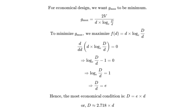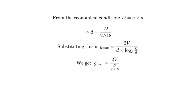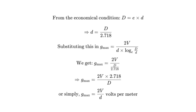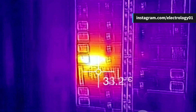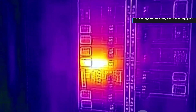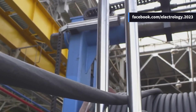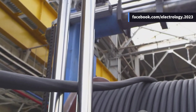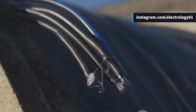Let's express this condition mathematically. From the relation D = e × d, we can say d = D / 2.718. Under this condition, Gmax = 2V / (D/2.718), which simplifies to Gmax = 2V/d volts per meter. However, in practical cases — especially for low and medium voltage cables — the diameter calculated from this formula often turns out to be too small when we consider the current carrying capacity. A cable designed strictly according to this equation might not handle the desired current safely, because smaller conductors have higher current density and greater heating. That's why, in real-life applications, the conductor diameter is often increased slightly above the theoretical economical value.